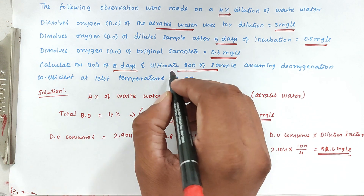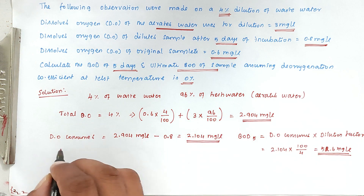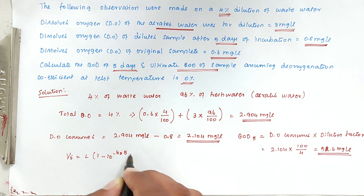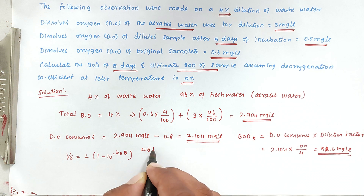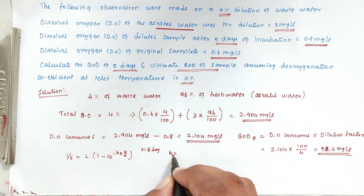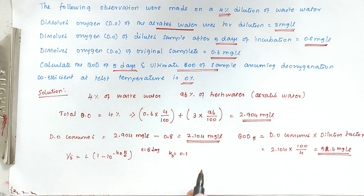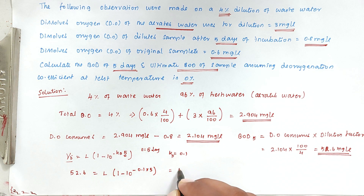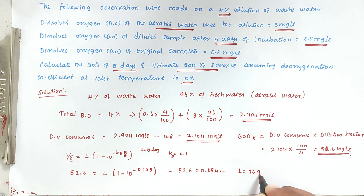Now we find the ultimate BOD of the sample using the formula: Y₅ = L × (1 − 10^(−KD × 5)), where KD is the deoxygenation coefficient and T is 5 days. Assuming KD = 0.1, we substitute: 52.6 = L × (1 − 10^(−0.1 × 5)). Solving this gives 52.6 = 0.684 × L, so L = 76.9 mg per litre. This is the ultimate BOD of the sample.